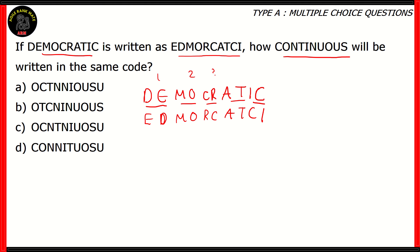Now if you look at it, the even pairs — such as pairs 2 and 4 — have the letters written as-is from the original word; they haven't been changed. However, for the odd pairs such as D-E, C-R, and I-C, the letters' positions have been interchanged. So for D-E, in the code it's written as E-D. C-R becomes R-C, and I-C becomes C-I. This is what the code is: we divide the 10-letter word into five pairs, and every odd pair gets its letters interchanged.